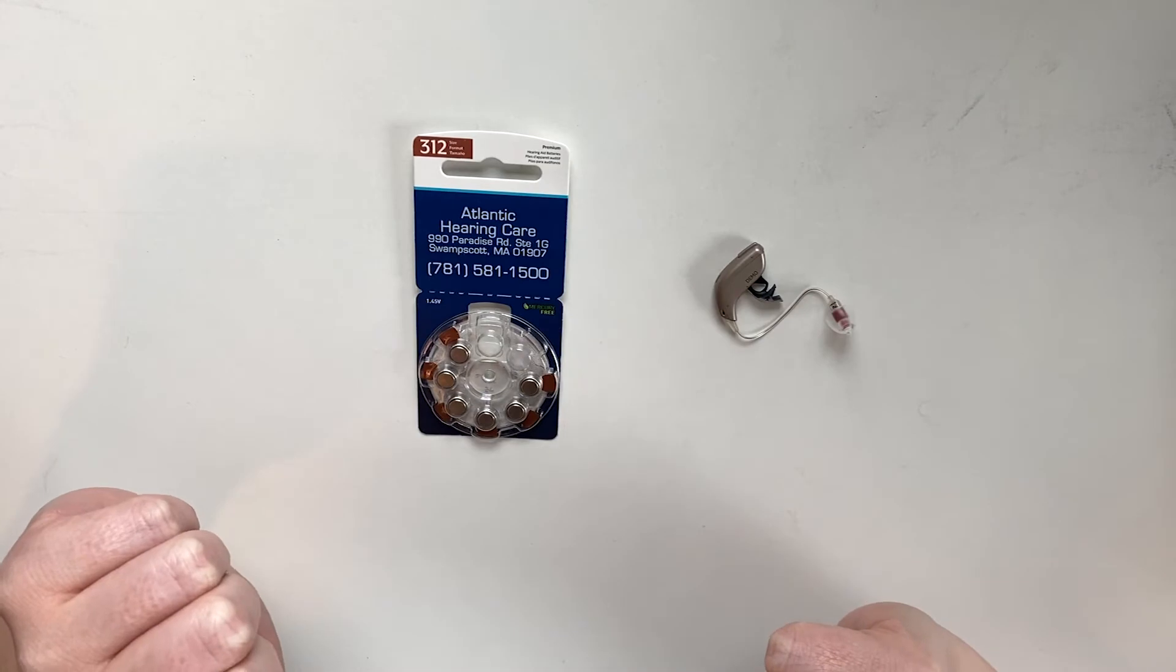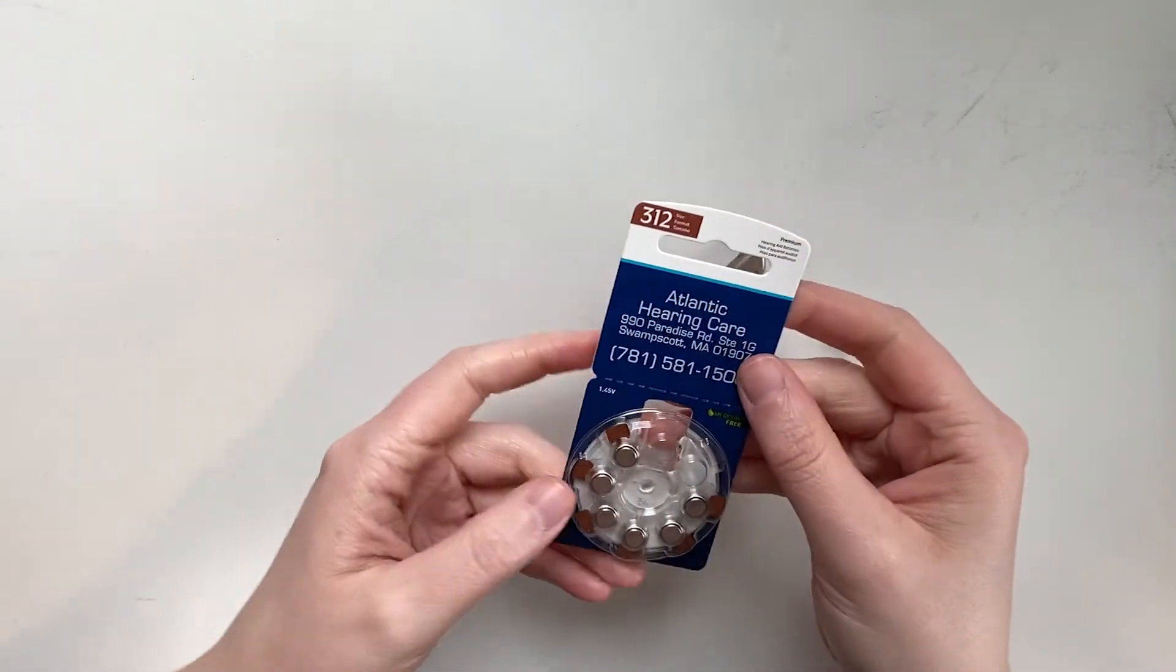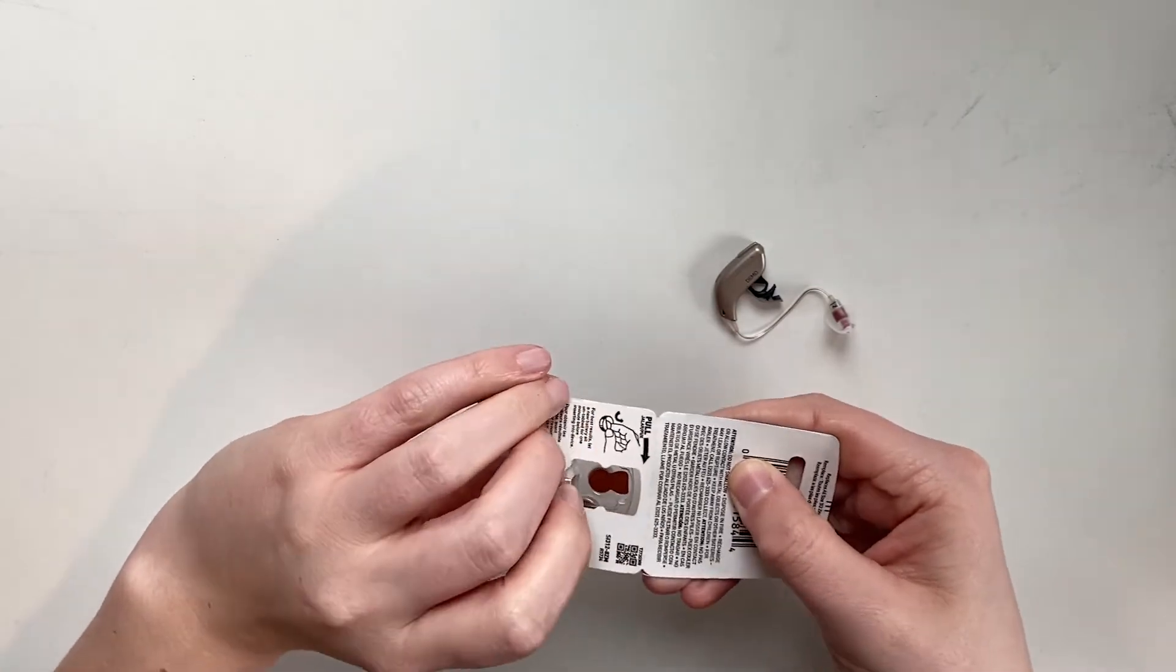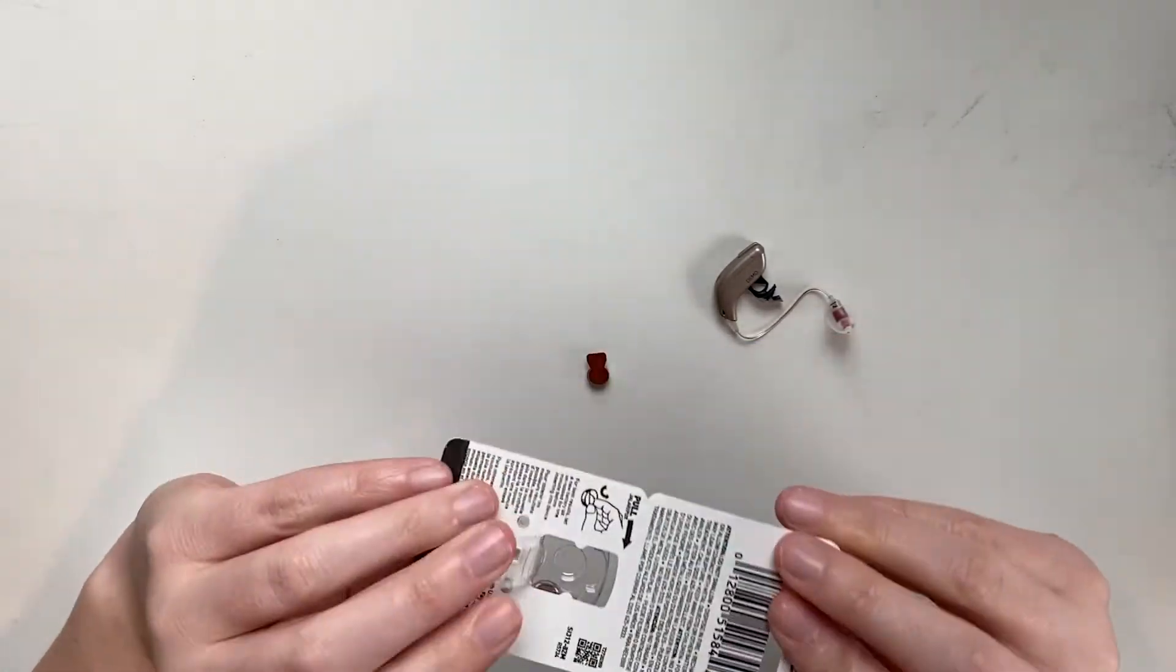Then we're going to take a new battery out of our package. To do that, you spin the wheel, open up this little door on the back, and take one of the batteries out.